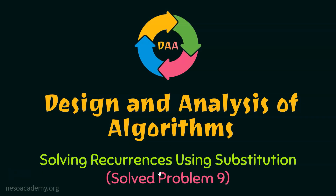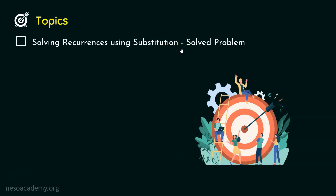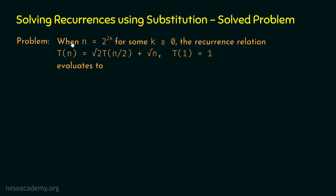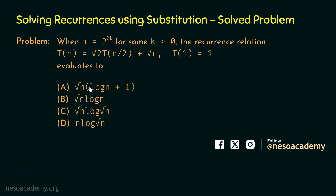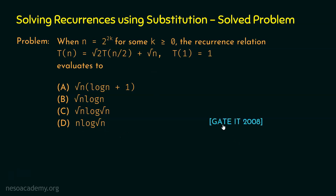Let's solve problem number 9 on recurrences using the substitution method. The problem, asked in GATE IT 2008, is: when n equals 2 to the power 2k for some k ≥ 0, the recurrence relation T(n) = √2·T(n/2) + √n, with T(1) = 1, evaluates to which of: √n·(log n + 1), √n·log n, √n·log√n, or n·log√n?